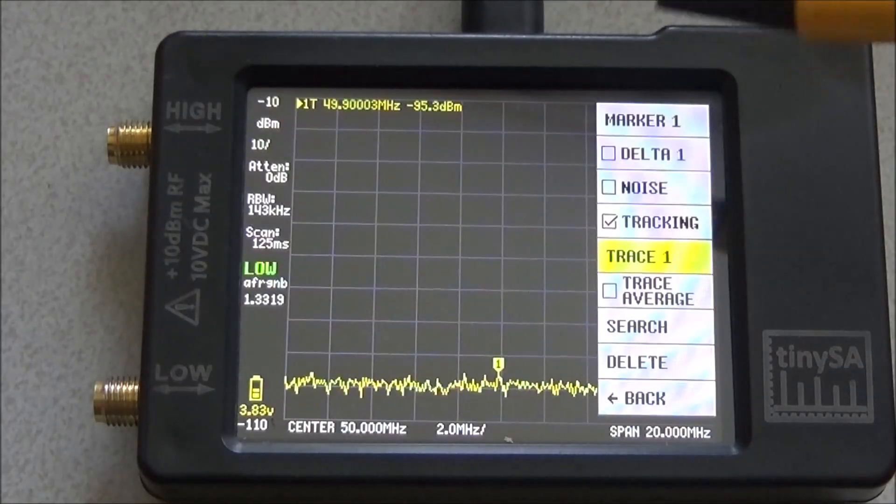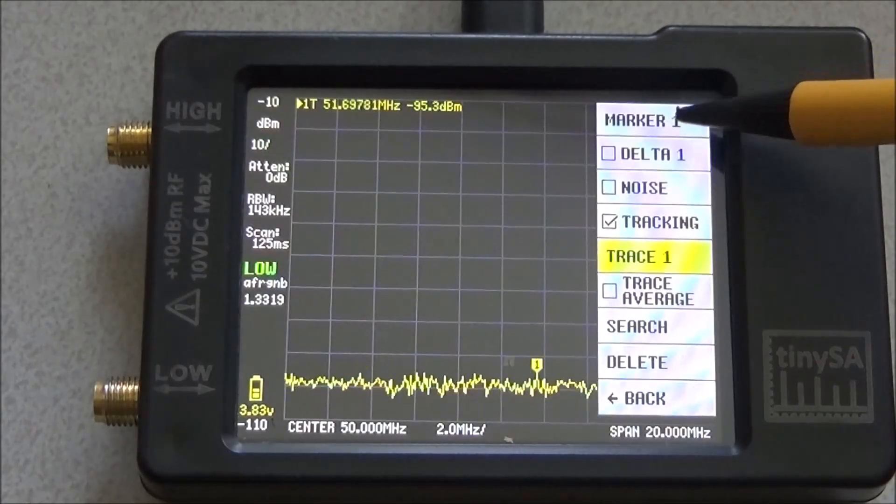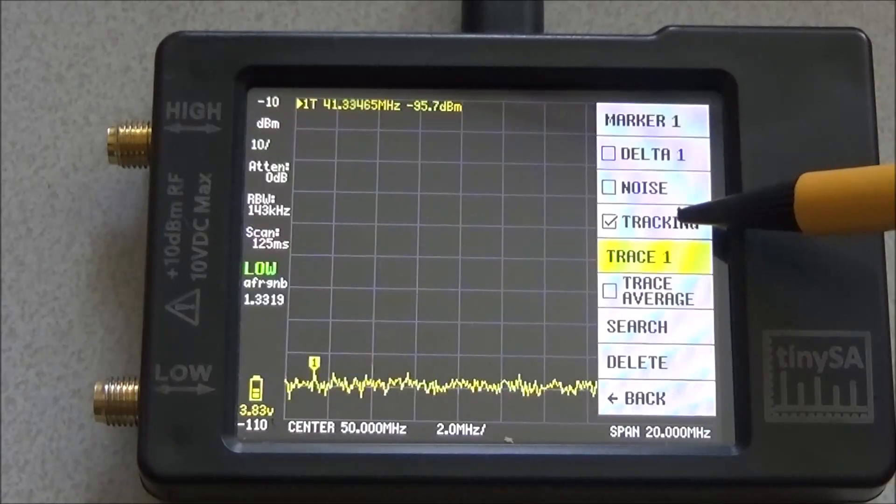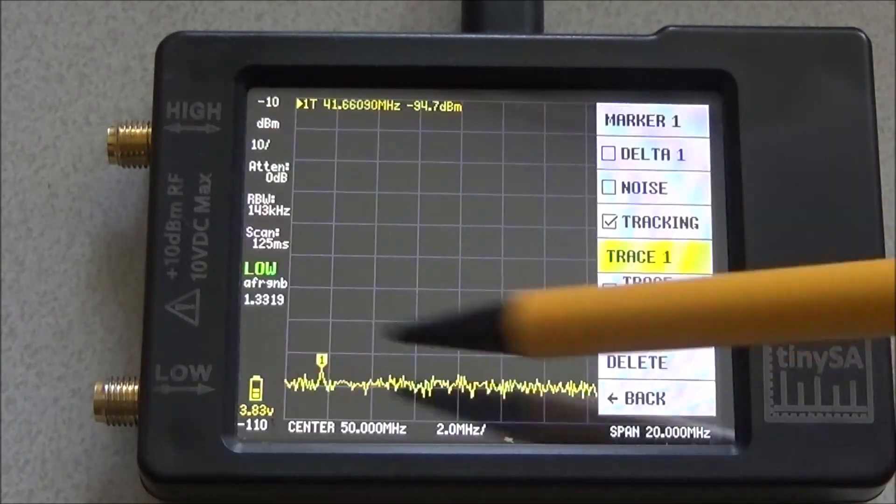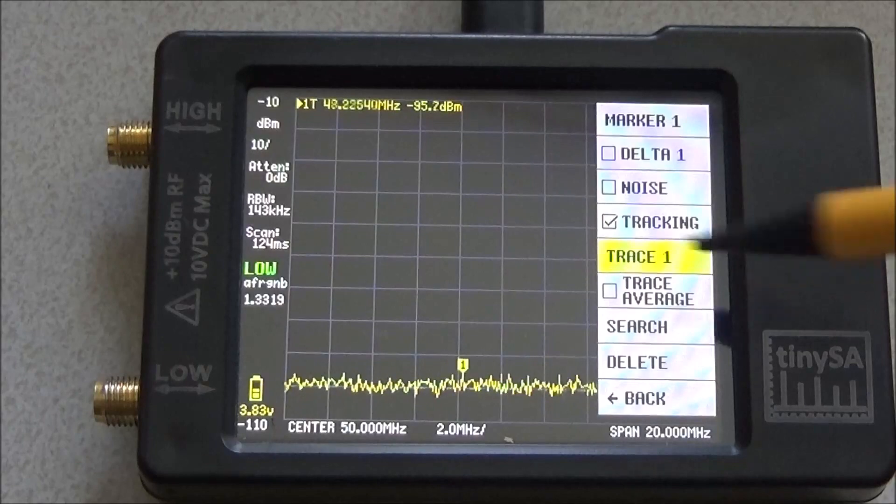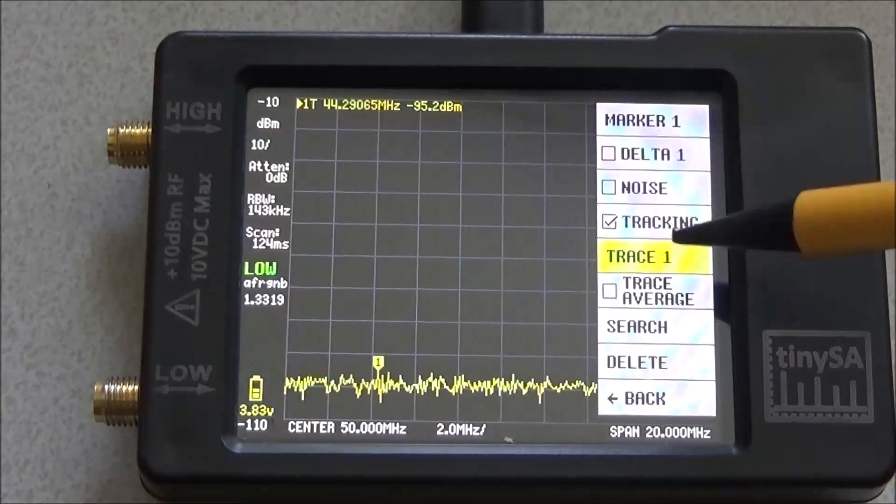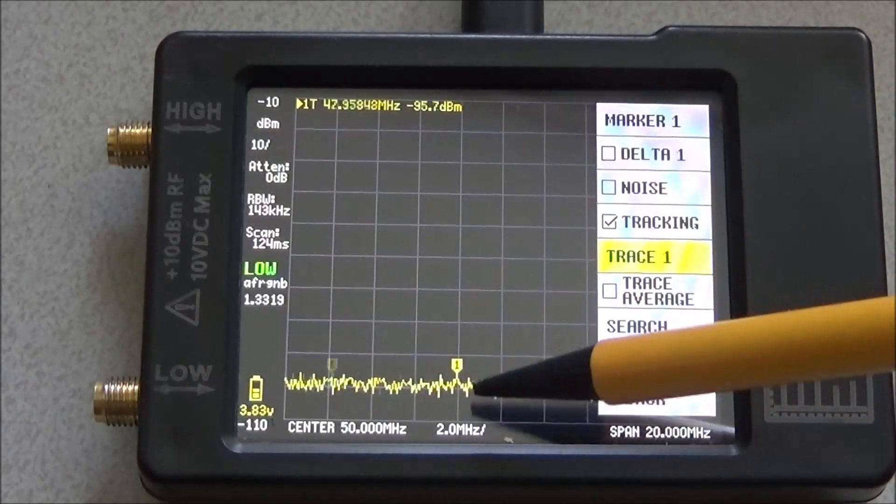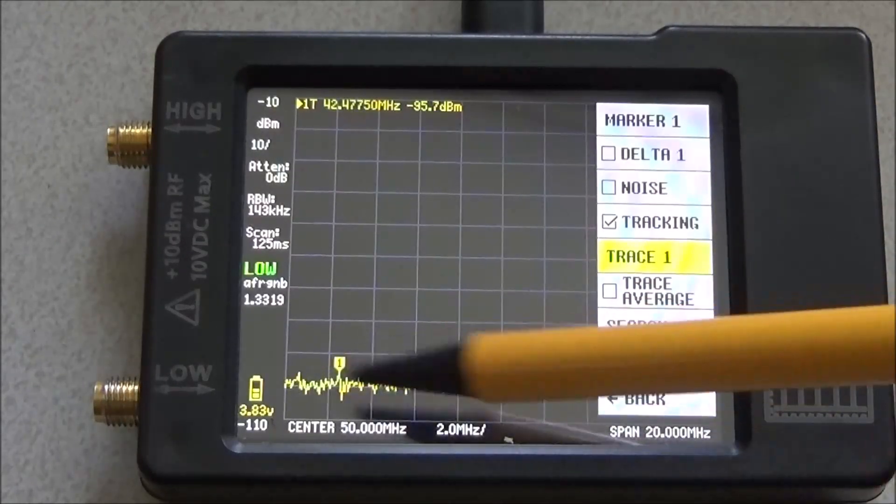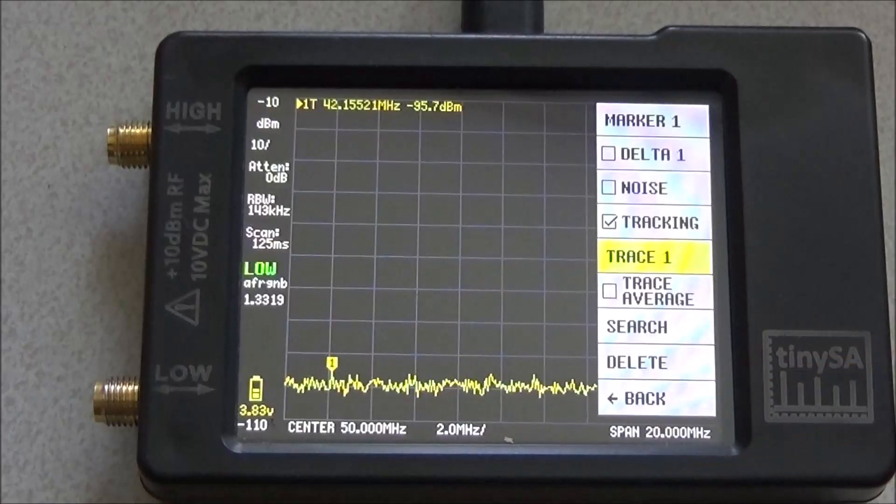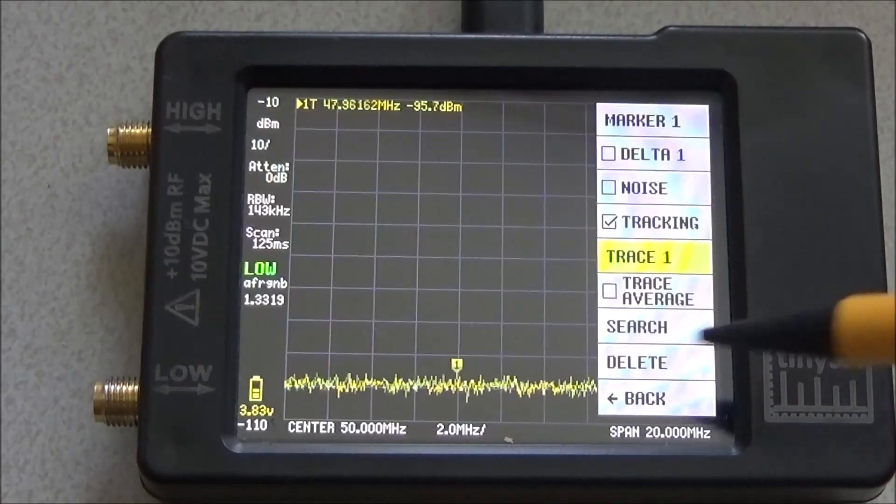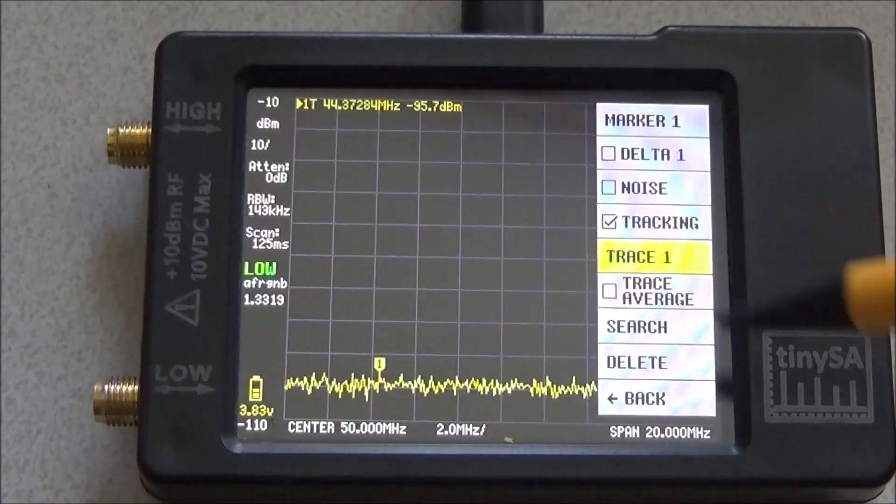There's also another new feature in the marker menu. You can see here we have a tracking marker that positions itself to the maximum of the scan. And then of course what you could do is by averaging find the average level and then position your marker.